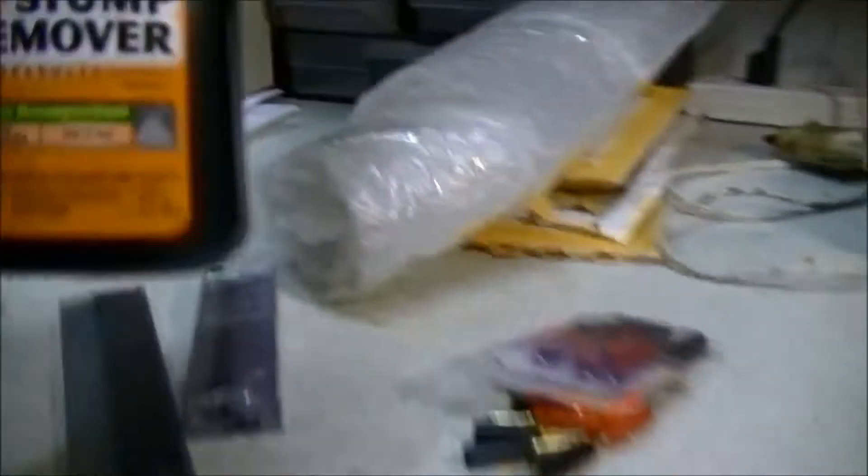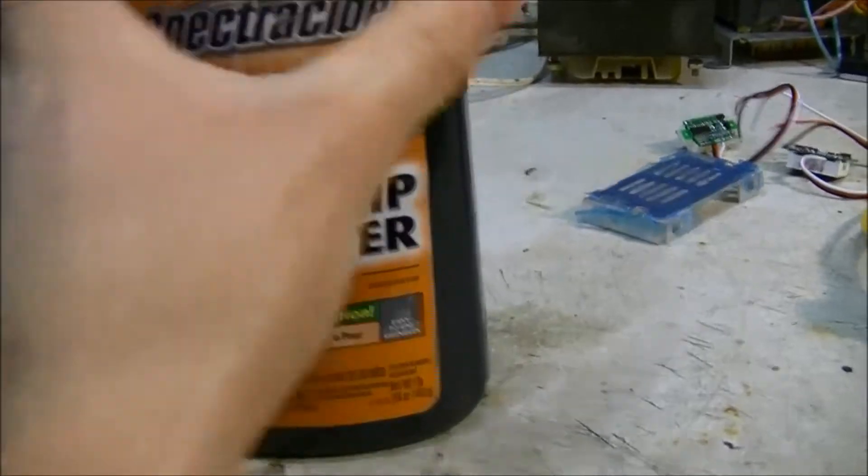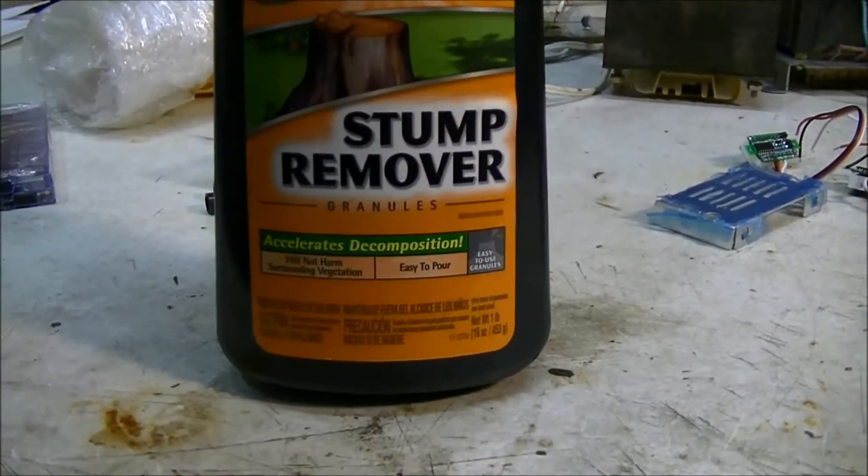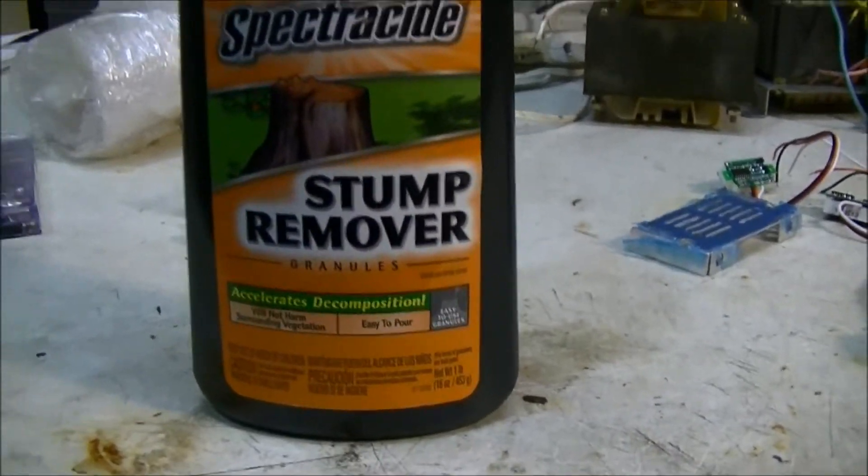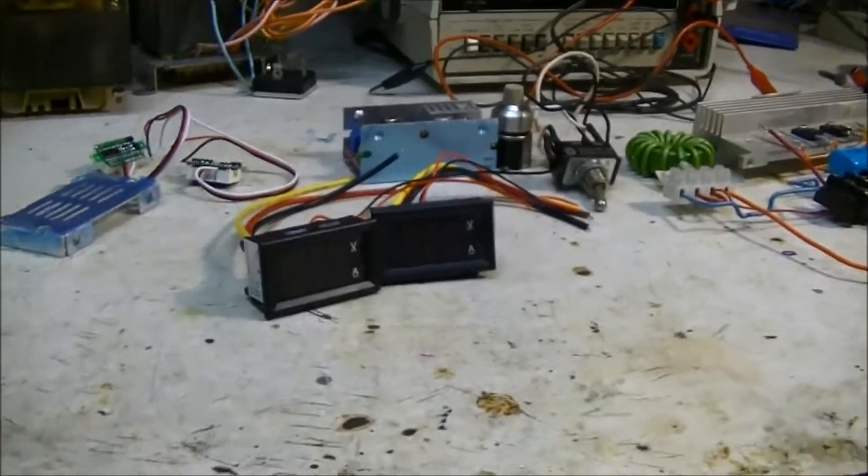And then, I also got some stump remover, so kind of cool there, although this didn't come from eBay. And why I want this is because it's potassium nitrate, and I'm gonna be making some sugar rockets. I'm kind of excited about doing that too, that's gonna be fun. So yeah, that's what I got for my birthday, guys.